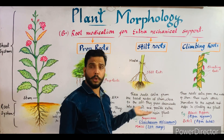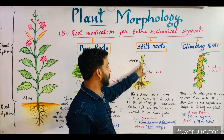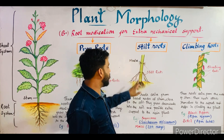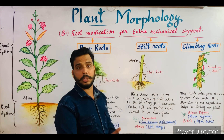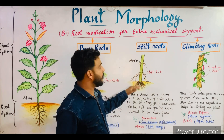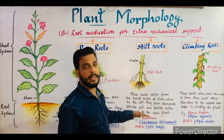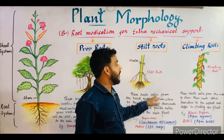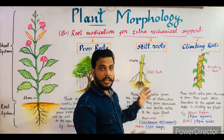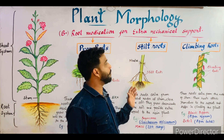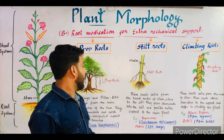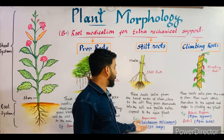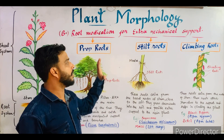These roots arise from the basal nodes of the stem, close to the soil. The plant is very tall, so these basal nodes are close to the soil surface. The roots grow downward into the soil and provide extra support to the main plant. When these roots enter the soil, they create extra support for the main stem. This type of root is known as stilt root. The example is sugarcane, botanical name Saccharum officinarum, and maize, botanical name Zea mays.